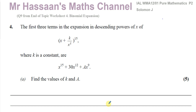Welcome back to Mr. Hassan's Maths Channel. In this question, I'm going to be answering question number four from the Solomon J P2 collection, also called the C2 collection. It's from a collection of Edexcel questions from the past which have been collected together. This is from the J paper, and it's about binomial expansion.